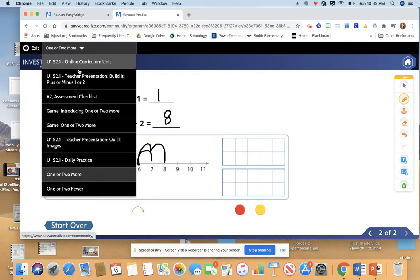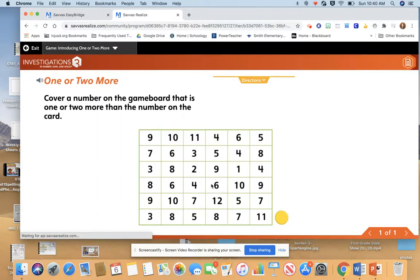Next, we're going to learn a game that you're going to be playing called one or two more. Your game board is located in your binder in the math section. To play this game, you need your one or two more game board, your primary number cards which you cut out and should be in a bag in your math tool bag, and you need some yellow counters or cubes to mark your answers. To play this game, you are going to cover a number on the game board that is one or two more than the number on the card. Let's try it together.